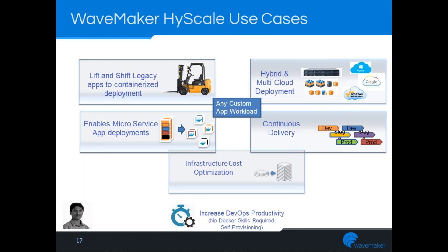In terms of use cases, a number of businesses can now lift and shift their legacy applications and use HighScale to have a containerized deployment in a matter of days as opposed to months. Businesses use HighScale to deploy workloads in hybrid and multi-cloud environments. WaveMaker HighScale is a natural fit for microservices deployments, supports continuous delivery, and enables infrastructure cost optimization through container technology and built-in platform innovations.